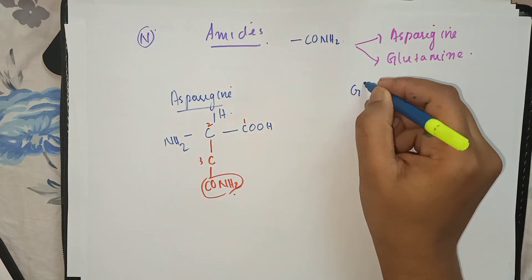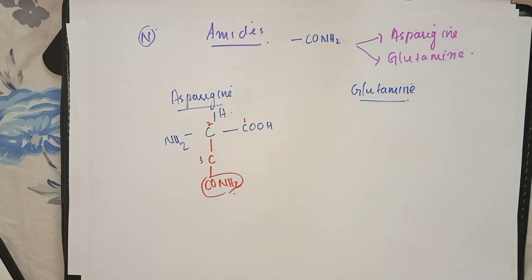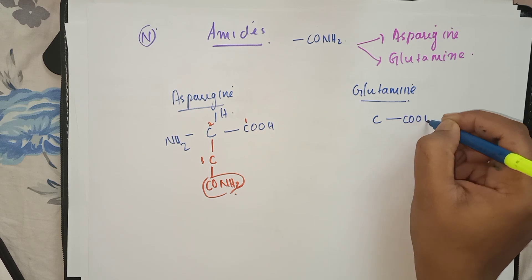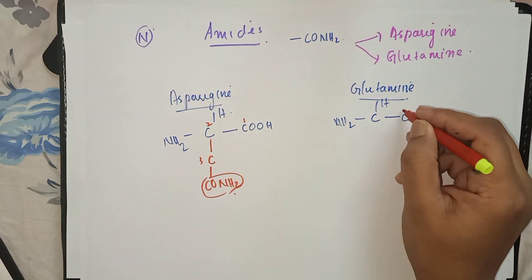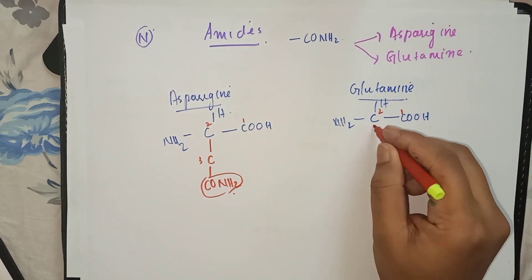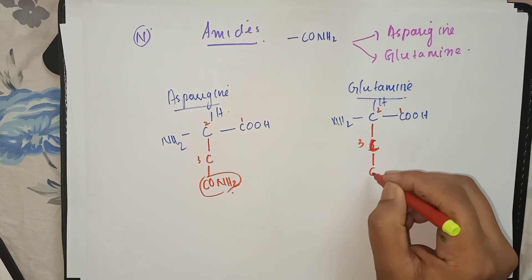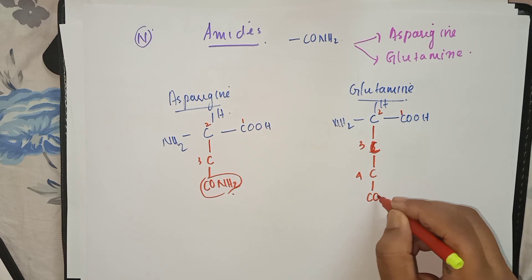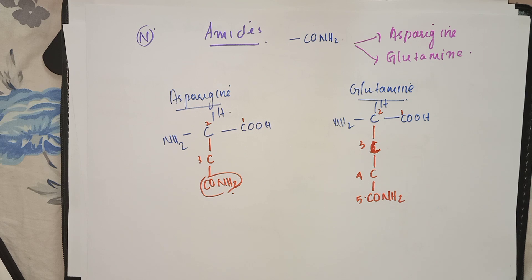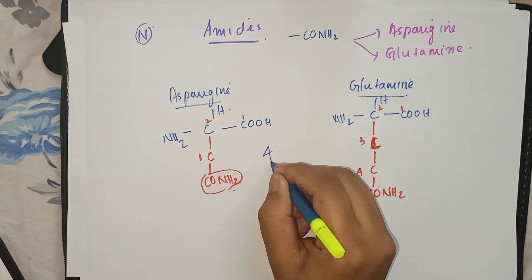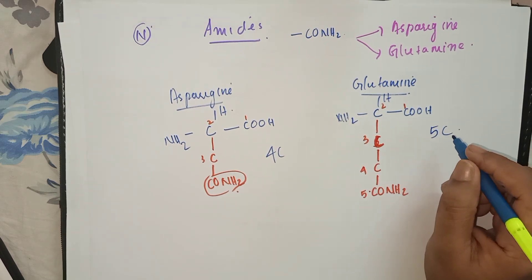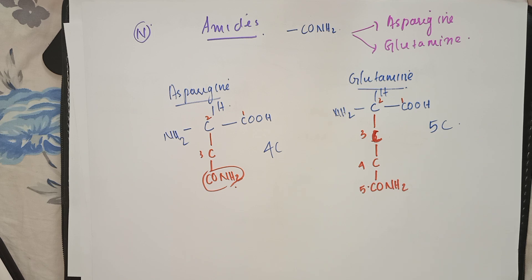Glutamine also contains a CONH₂ group in its structure and is drawn similarly to glutamic acid. Draw the basic structure, then extend the variable chain to five total carbon atoms, with a CONH₂ group at the fifth position. The difference between asparagine and glutamine is the number of carbon atoms: asparagine has four and glutamine has five. This concludes the first part of the video on amino acid classification; further classification will be covered in the second part.